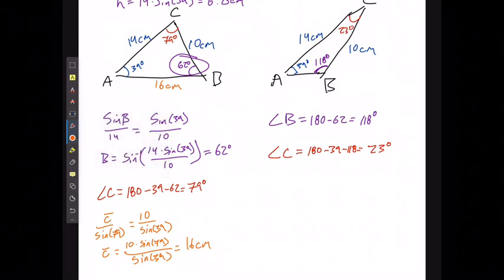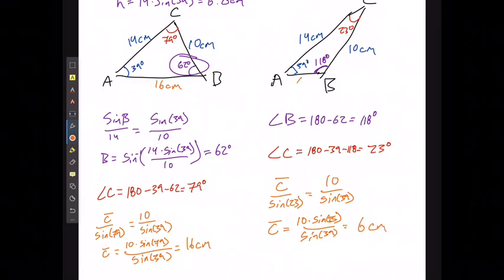And side length C, same process. C divided by sine of 23 is going to equal 10 over sine of 39, which means that side length C is going to equal 10 times sine of 23 divided by sine of 39, or 6 centimeters. And these are my two triangles I can create from the exact same information.